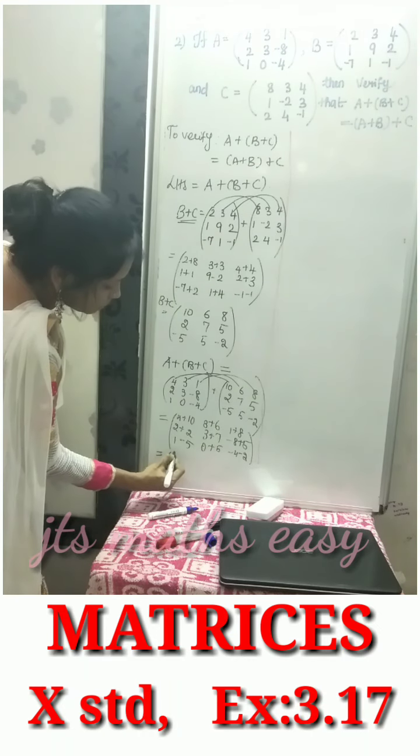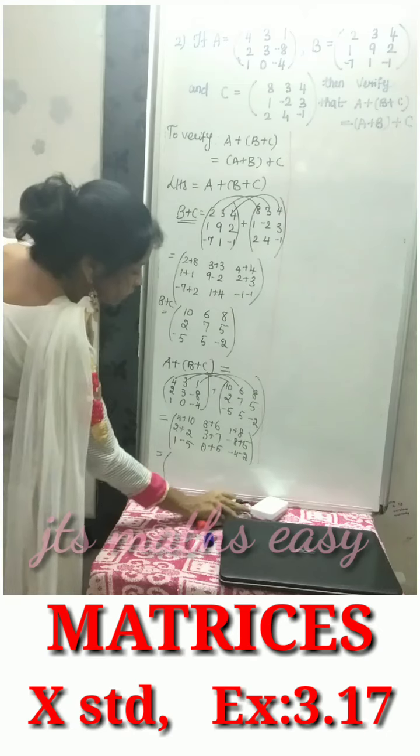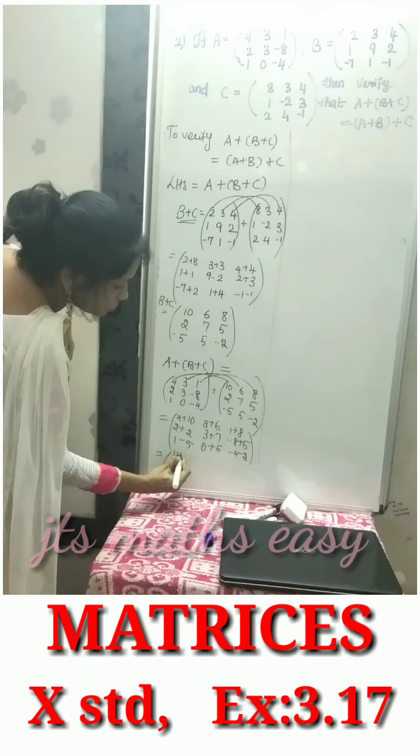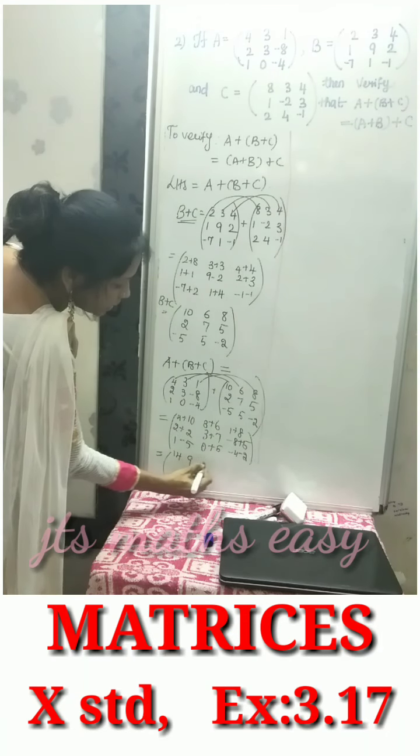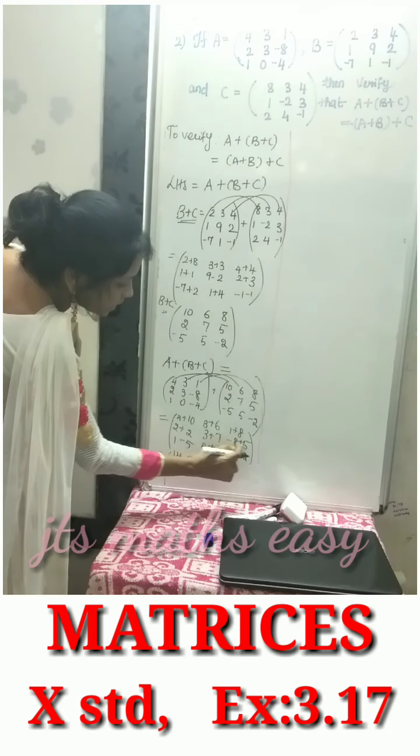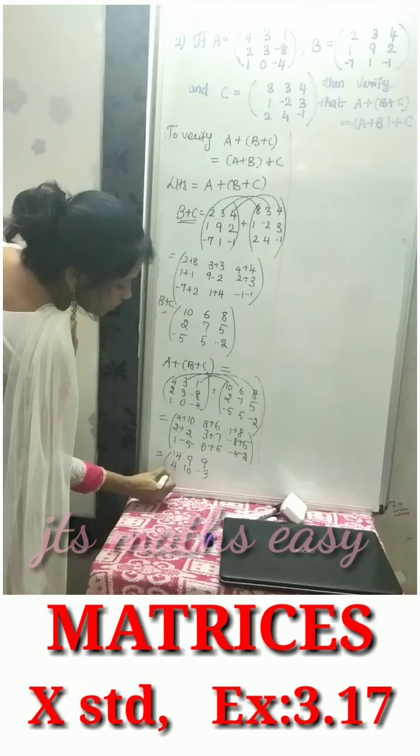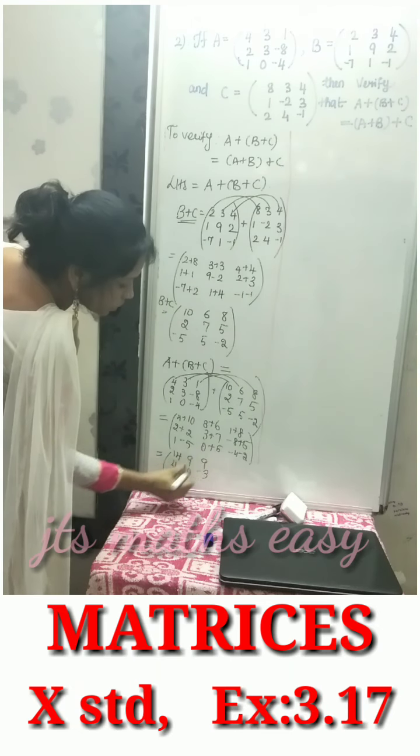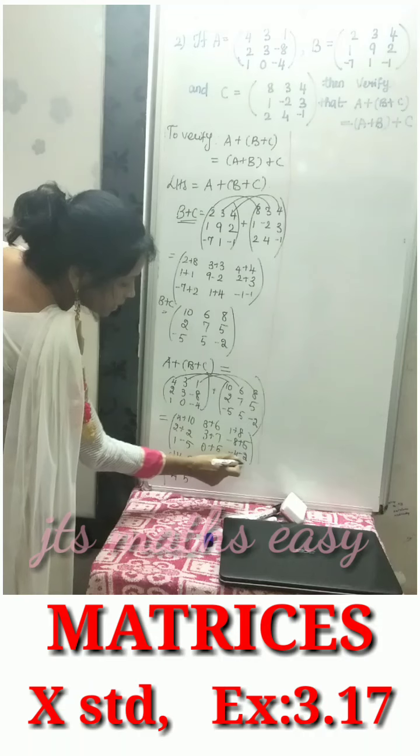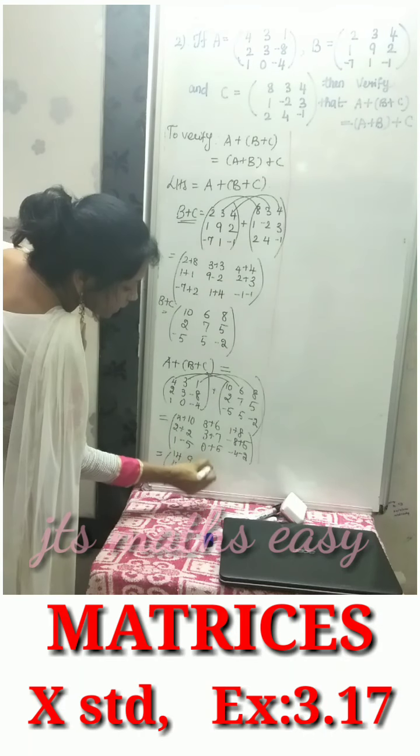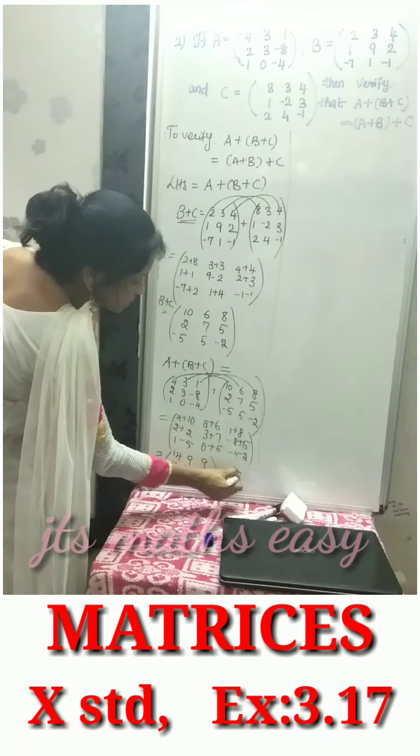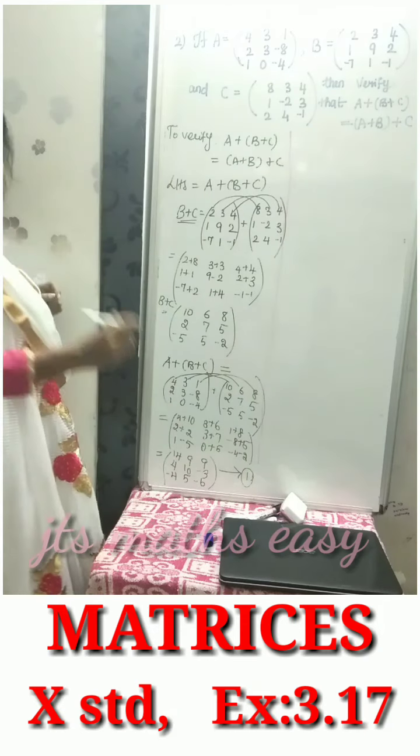The answer is 4 plus 10 equals 14, 9, 6 plus 3 equals 9, 9, 4, 10, minus 8 plus 5 equals minus 3. 1 minus 5 equals minus 4, 5, minus 4 minus 2 equals minus 6. This is equation number 1.